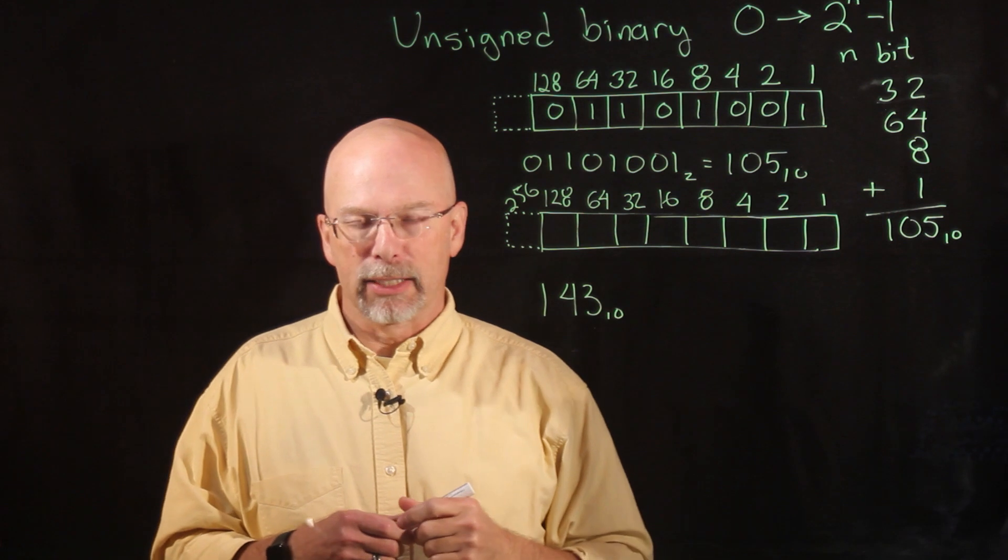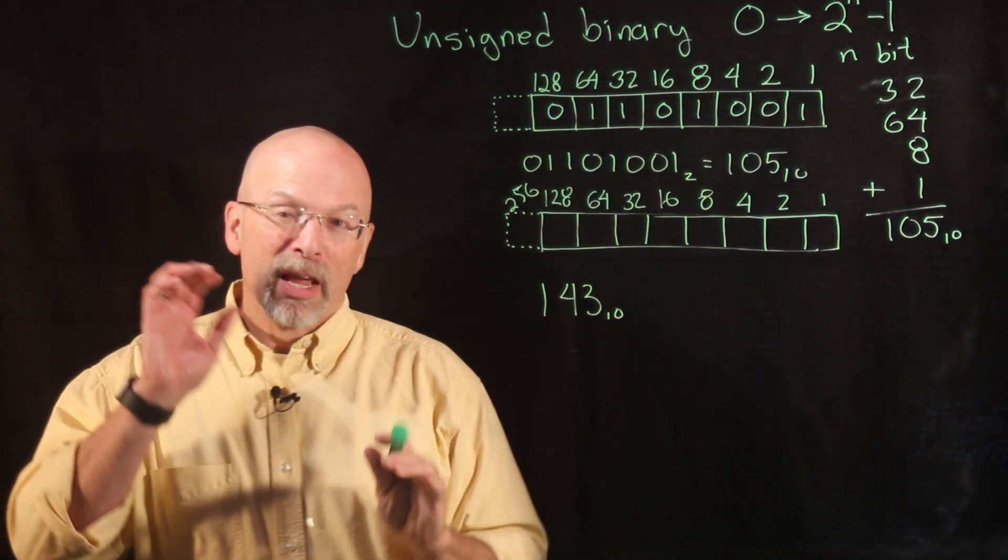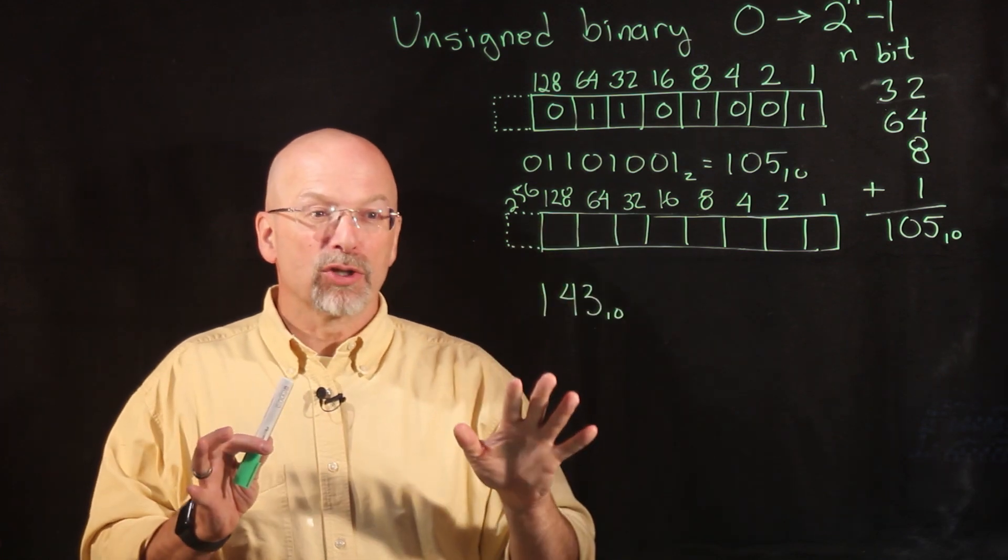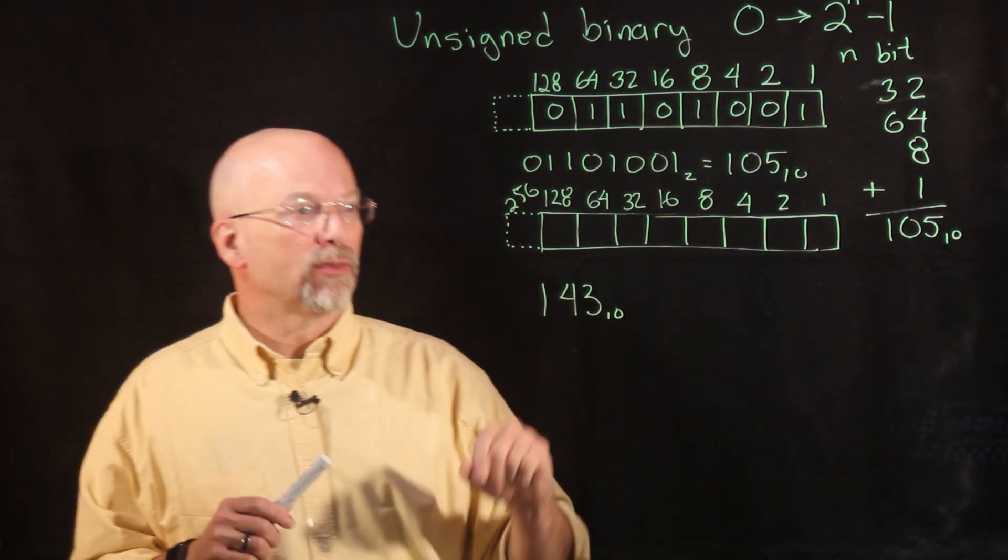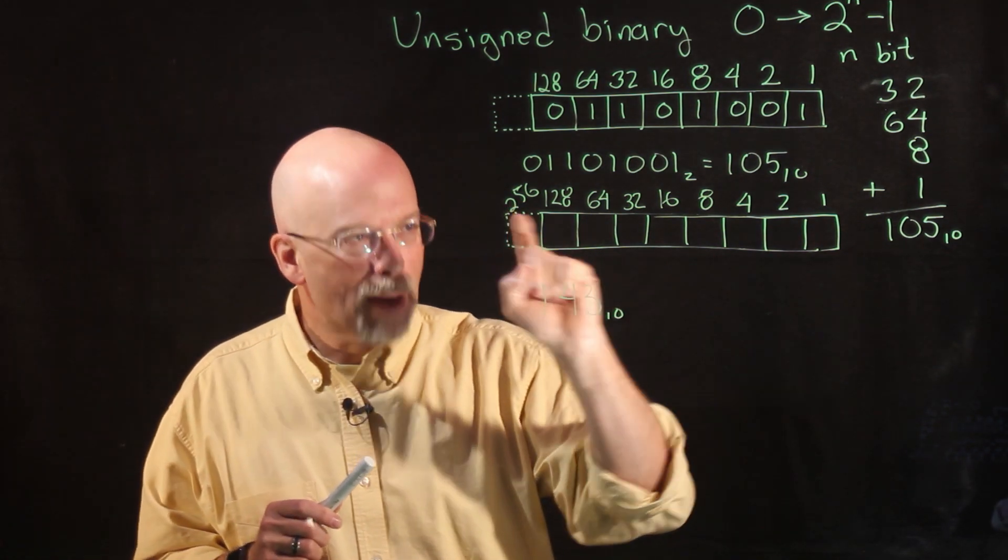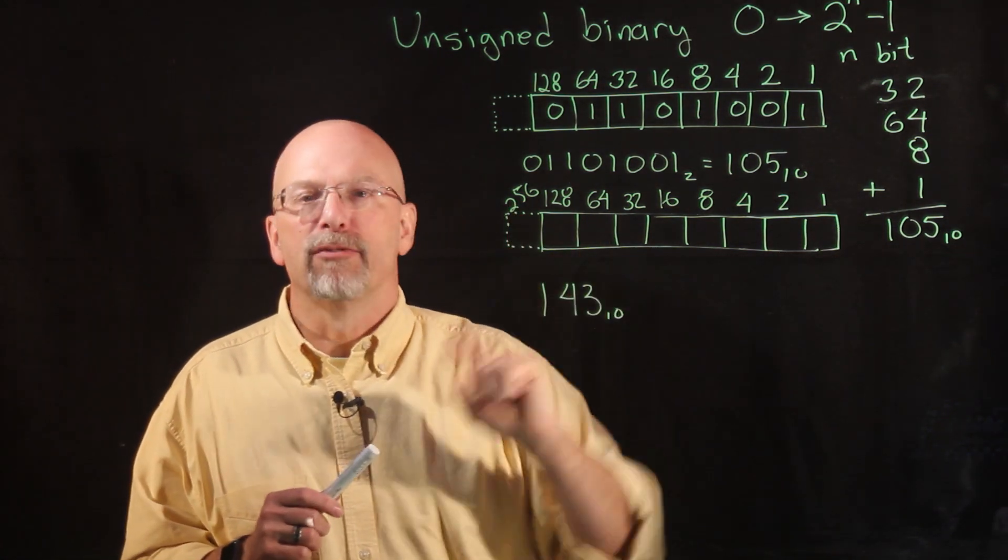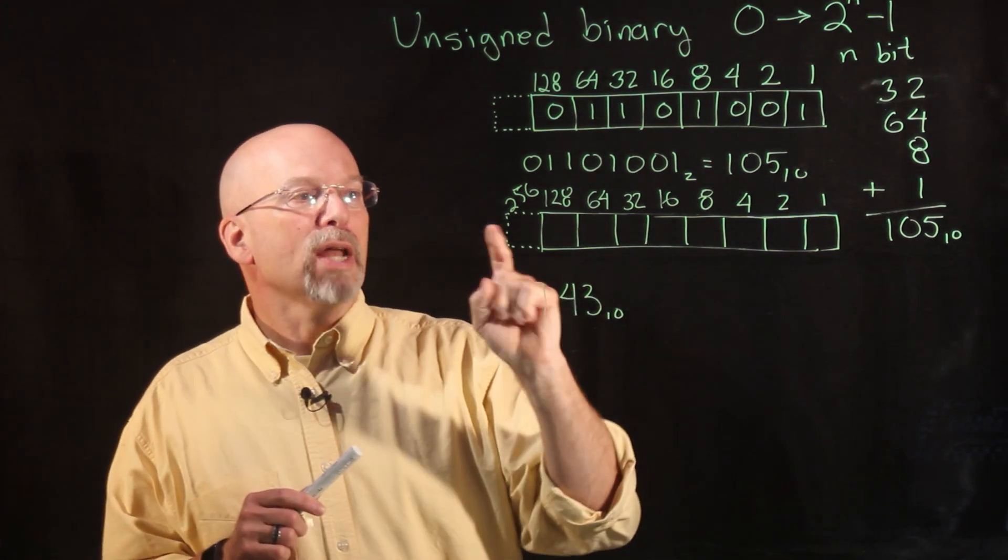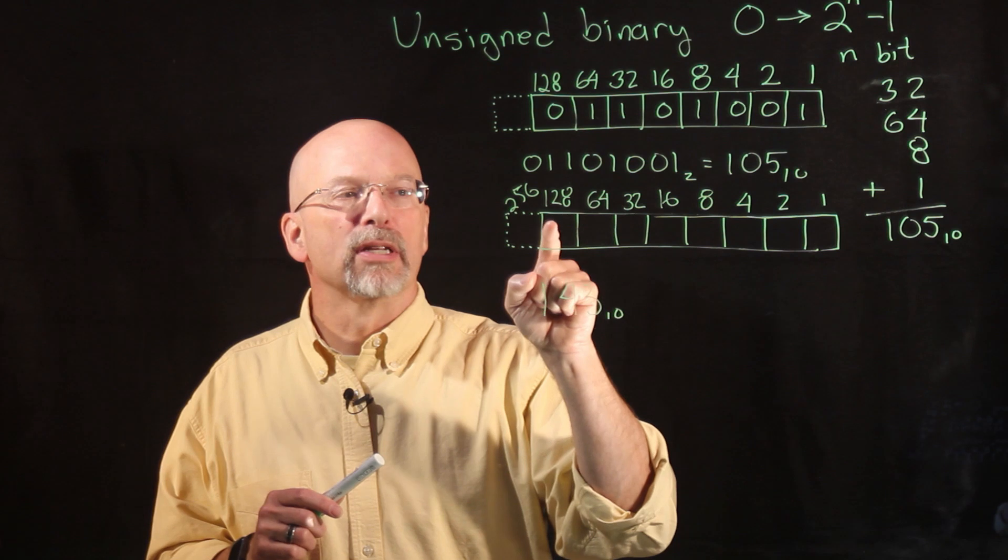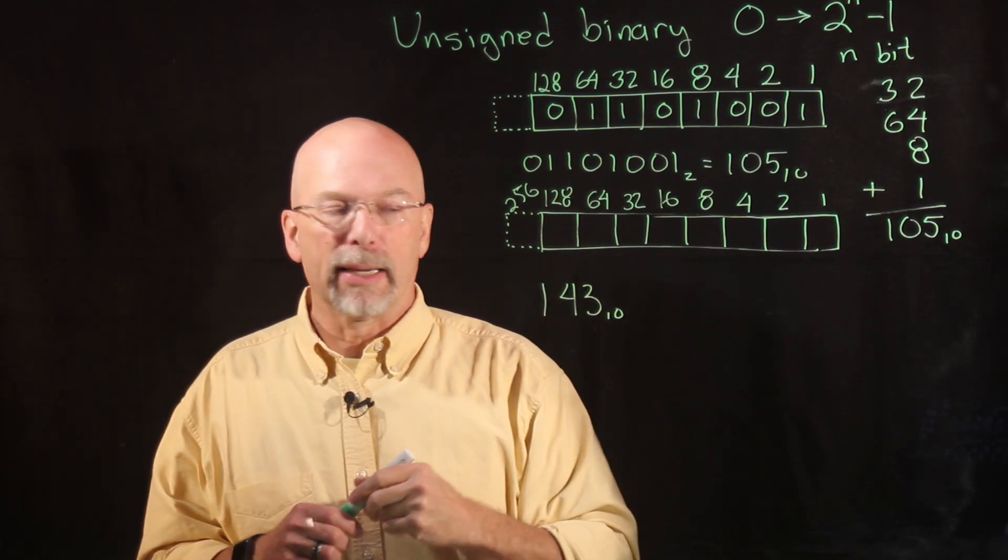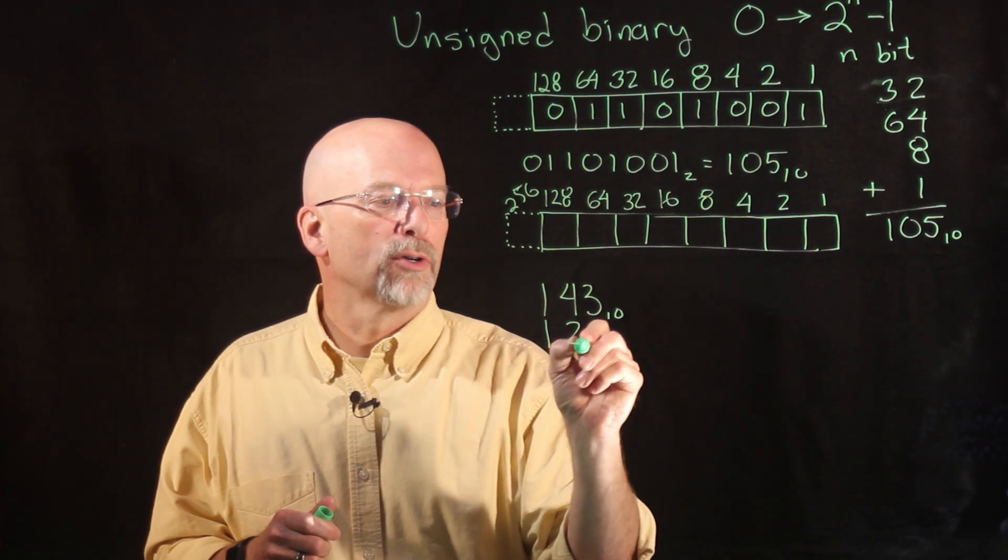Now how do we do it? Well, the way we do it is—and there are a couple of tricks—but what we're going to look at right now with this particular video is you take out the largest power of two you can from this and have it still remain positive. So what is the largest power of two that is less than or equal to 143? Well turns out it's 128. So we pull out 128.